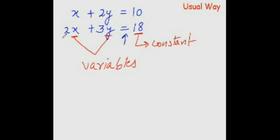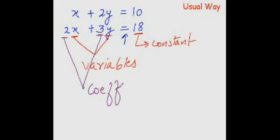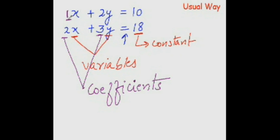This 2 and 3 that you are seeing are known as coefficients — basically they are numbers that are put before the variables. When there is no number put before a variable, the coefficient is always 1, but we don't write 1; it is understood that it is 1.